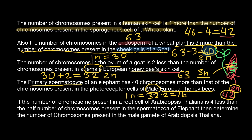The primary spermatocyte of an elephant has 40 chromosomes more than the chromosomes present in the photoreceptor cells of the male European honeybee. The primary spermatocyte is diploid — it gives rise to secondary spermatocytes and eventually to haploid sperm. The male honeybee's photoreceptor cells have 16 chromosomes. So the elephant's diploid number is 16 plus 40, which equals 56 chromosomes.